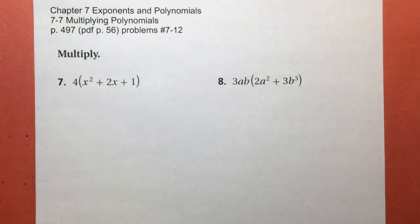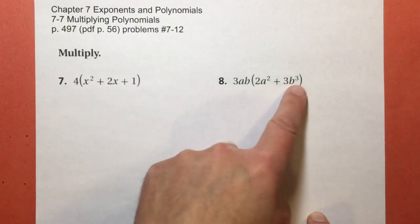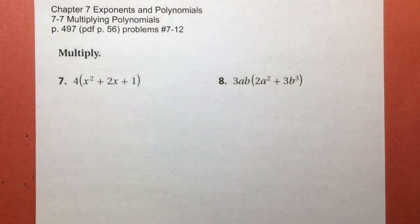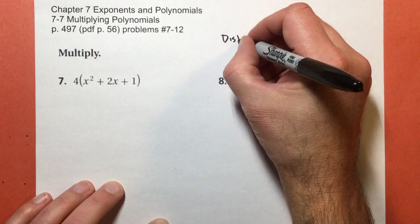In these problems, we're going to multiply a monomial, just one term, by a polynomial. Three terms or two terms. I don't think any of them get more than that. Now, like I said, you can use what we call distribution, the distributive property.